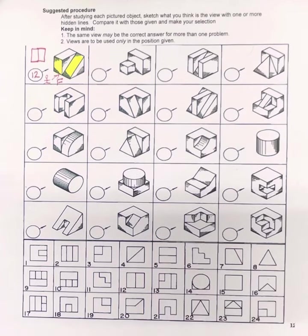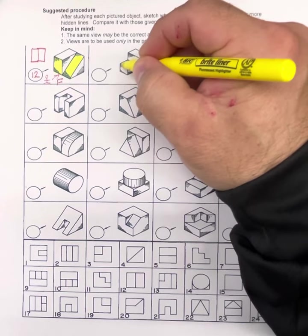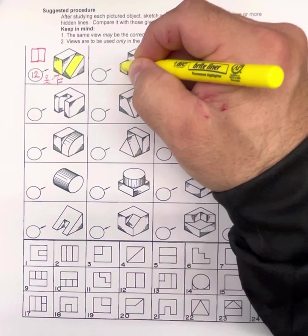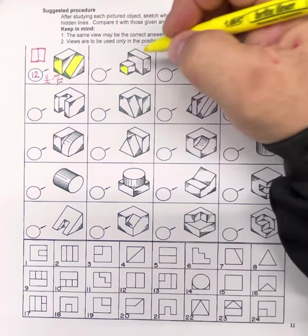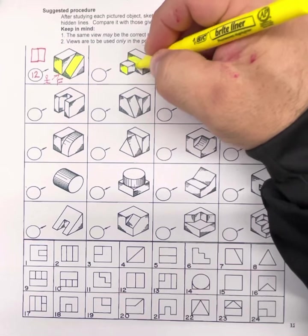Next thing, let's go to the next example and I'm going to again highlight what I'm going to see in that front view. So in the front view, I'm going to see this surface area right here and I'm also going to see this surface area right here.